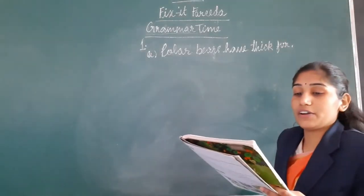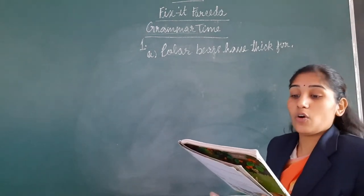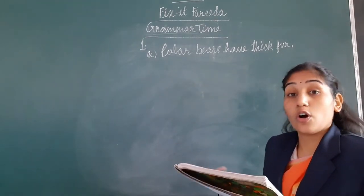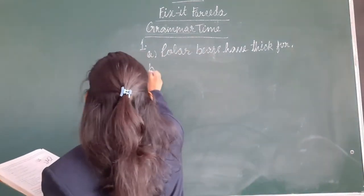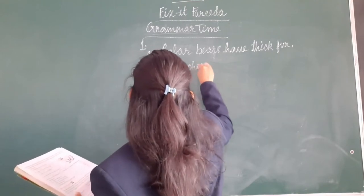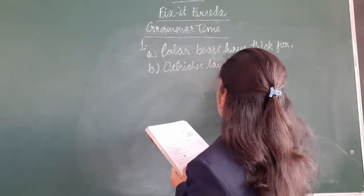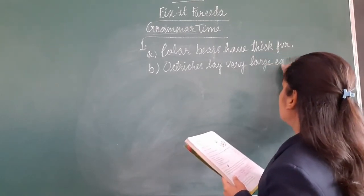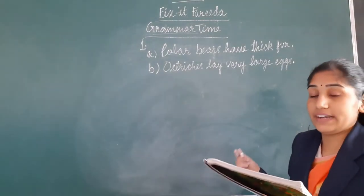Now part B: 'eggs very lay ostriches large' — here we can make a sentence: Ostriches lay very large eggs. Write it down and put a full stop at the end.